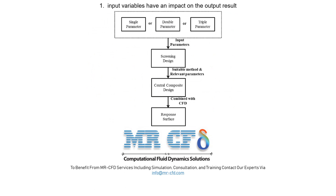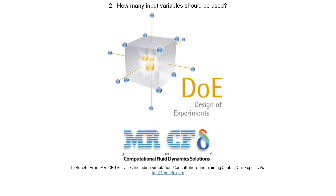Therefore, the purpose of DOE is, firstly, which input factors or parameters will have a significant impact on the output results or product of the process, and secondly, how much of these input factors or parameters should be used to achieve the desired output result or product.